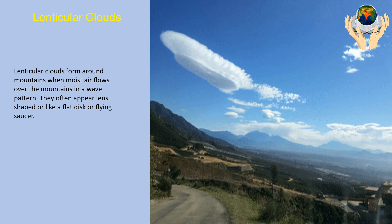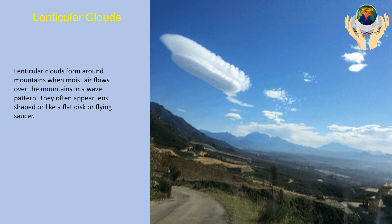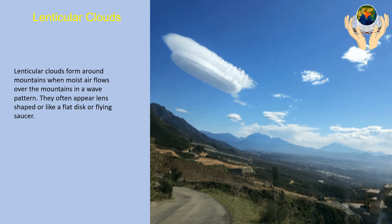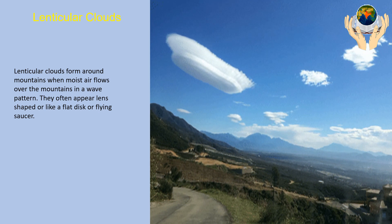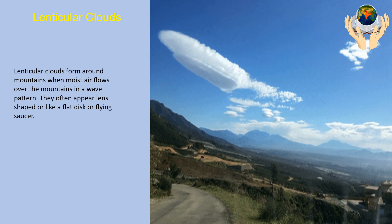Lenticular clouds. Lenticular clouds form around mountains when moist air flows over the mountains in a wave pattern. They often appear lens-shaped or like a flat disc or flying saucer.